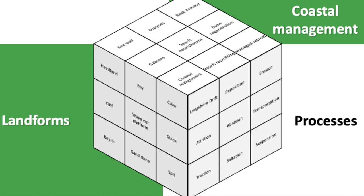For landforms we've got: headland, bay, cave, cliff, wave cut platform, stack, beach, sand dune, and spit. For coastal management we've got: seawall, groins, rock armour, gabions, coastal realignment, beach nourishment, dune regeneration, beach reprofiling, and managed retreat. And in terms of processes: longshore drift, deposition, erosion, attrition, abrasion, transportation, traction, saltation, and suspension. If you got those all correct — amazing work.